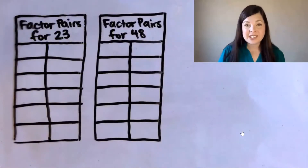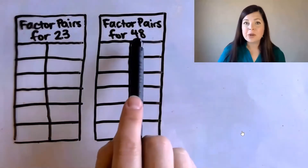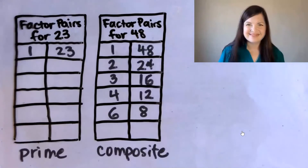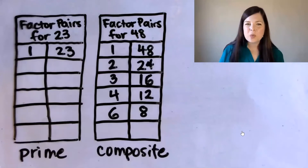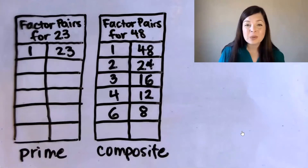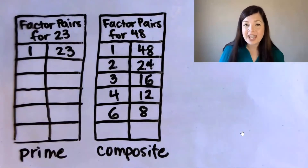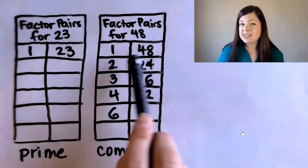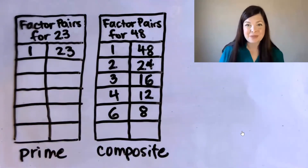Pause the video now and use a table to list the factor pairs for 23 and 48, and tell whether each number is prime or composite and how you know. Then come back and we'll discuss. 23 is a prime number because its only factors are 1 and itself. 48 is a composite number because it has lots of factors — more than just 1 and itself. In fact, we found 10 factors for 48. Great job!